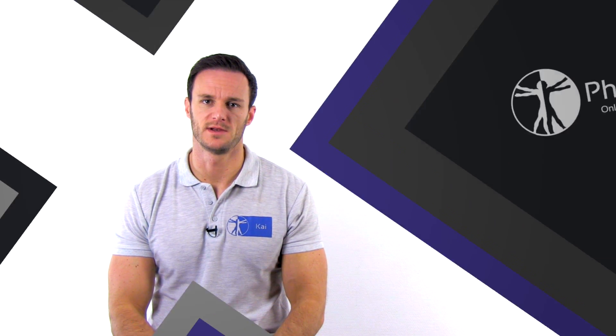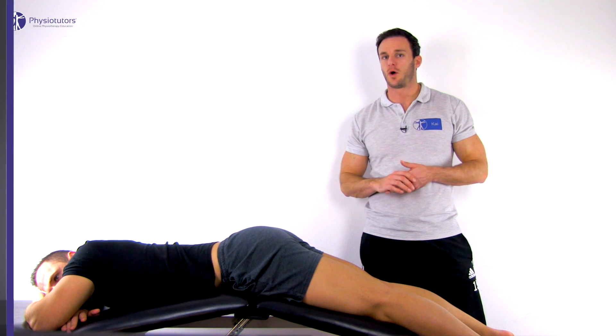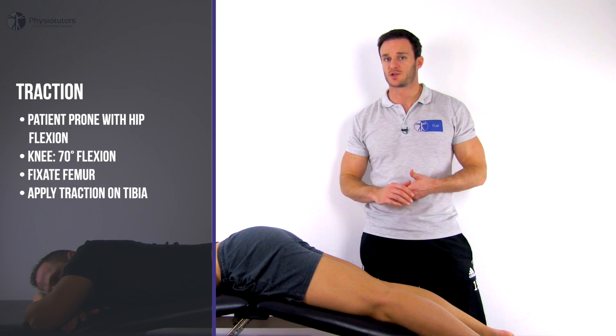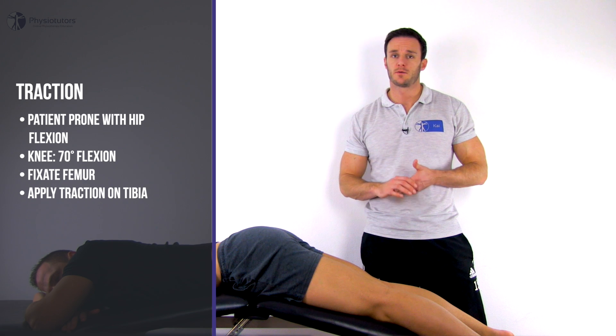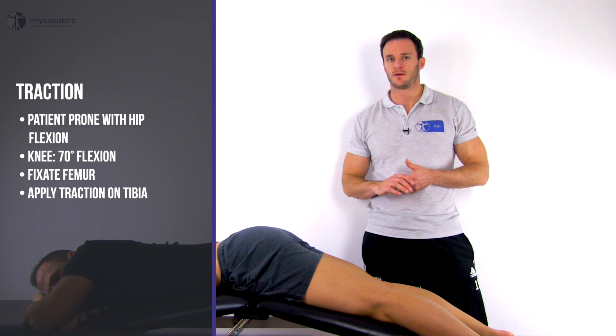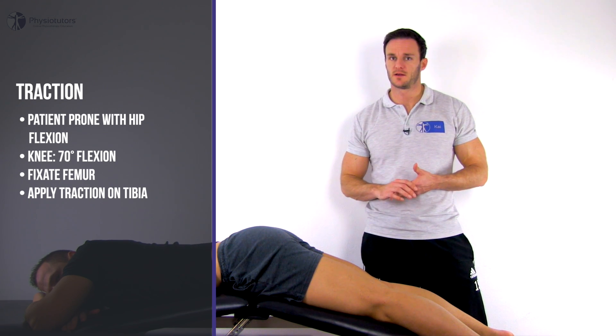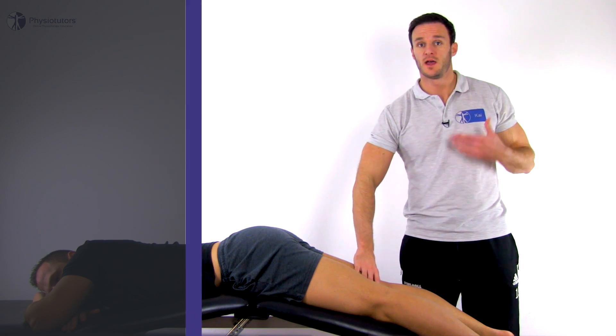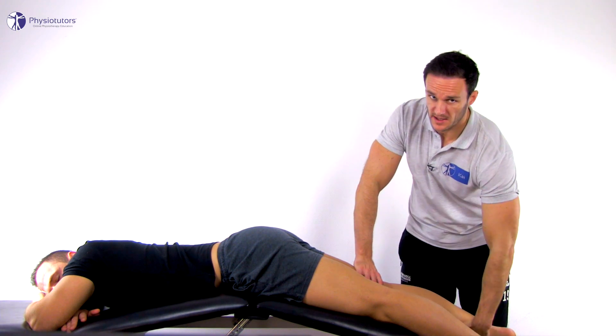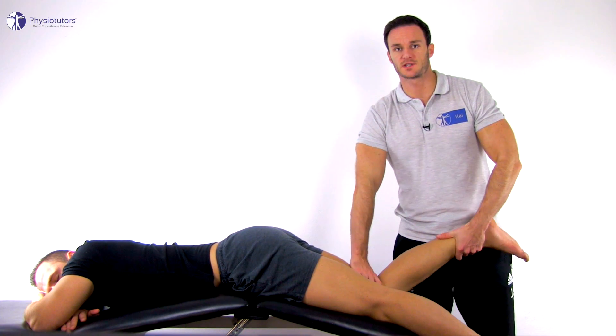The aim of traction is to gain information on joint play and to treat the whole joint capsule in case of high reactivity. To assess joint play of the whole capsule of the tibiofemoral joint, have your patient in prone lying position with slight hip flexion. The therapist is standing laterally. Then fixate the femur on the treatment bench with one hand and bring the knee into 70 degrees of flexion.